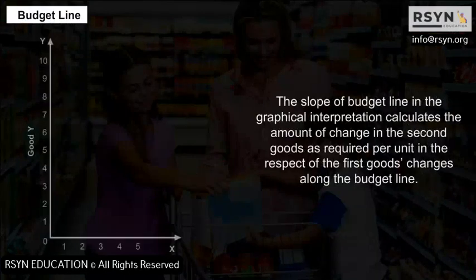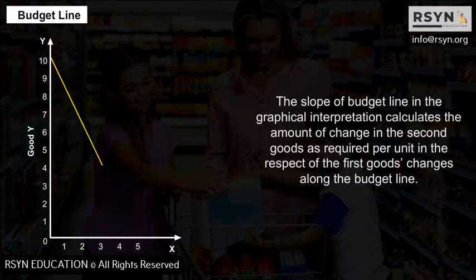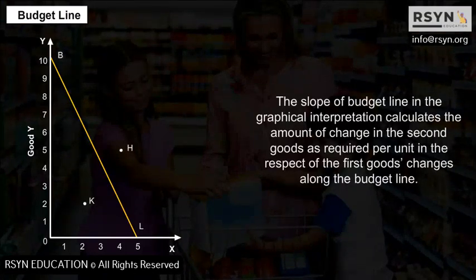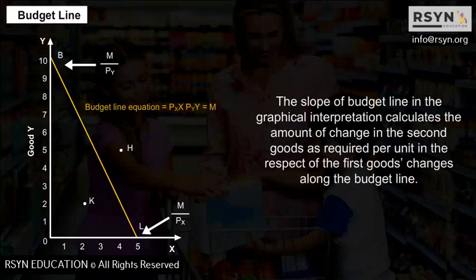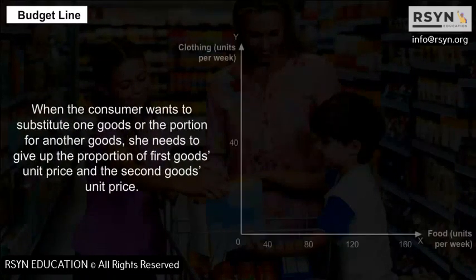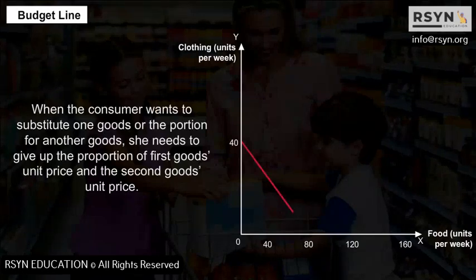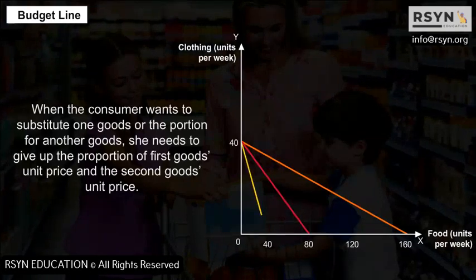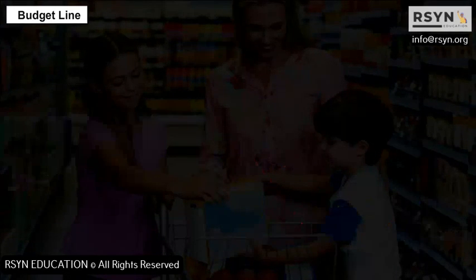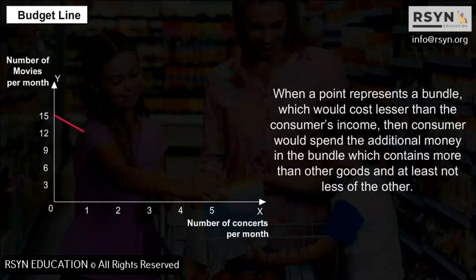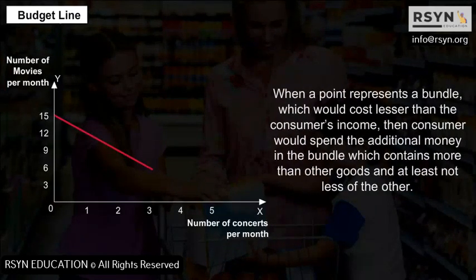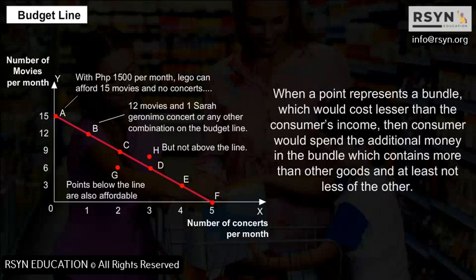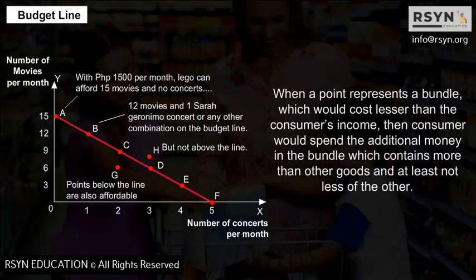The slope of the budget line in graphical interpretation calculates the amount of change in the second good per unit change in the first good along the budget line. When the consumer wants to substitute one good for another, she needs to give up the proportion defined by the unit prices of the two goods. When a point represents a bundle that costs less than the consumer's income, the consumer would spend the additional money on a bundle containing more of other goods.